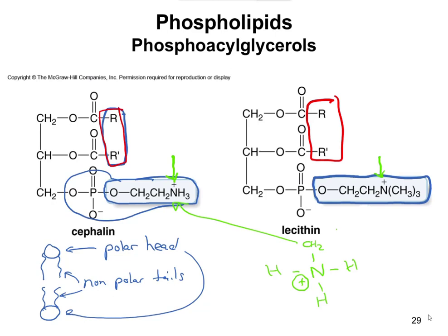The same thing happens in lecithin — it's a nitrogen that has CH3s everywhere and then the CH2, CH2 attached to it. Anytime you have a nitrogen with four bonds, it's going to have a positive charge. That positive charge fits into the polar head group because things that are charged are also polar. So again, phosphoacylglycerols have a glycerol backbone, two fatty acids attached to them, and then this polar head group, as shown here in the cephalin and the lecithin.